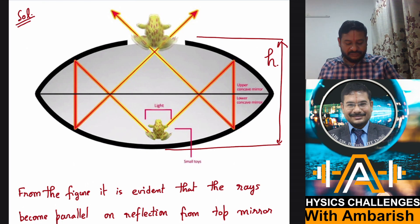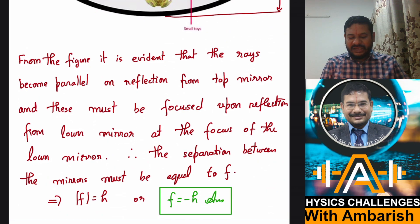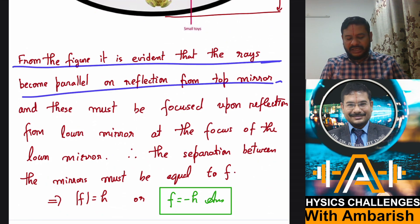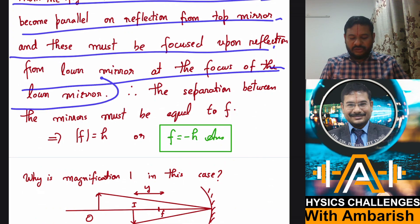So the ray swapping is happening not only in this direction, but also in 180 degree opposite. So you can see that if there's a cone of rays, this cone of rays is getting exactly inverted. So what is going to the right is finally going to the left. What is going into the page is finally coming out of the page and so on. So that's what I meant by radial inversion. Radially inverted image. So that's what I've written. So from the figure, it is evident that the rays become parallel on reflection from top mirror.